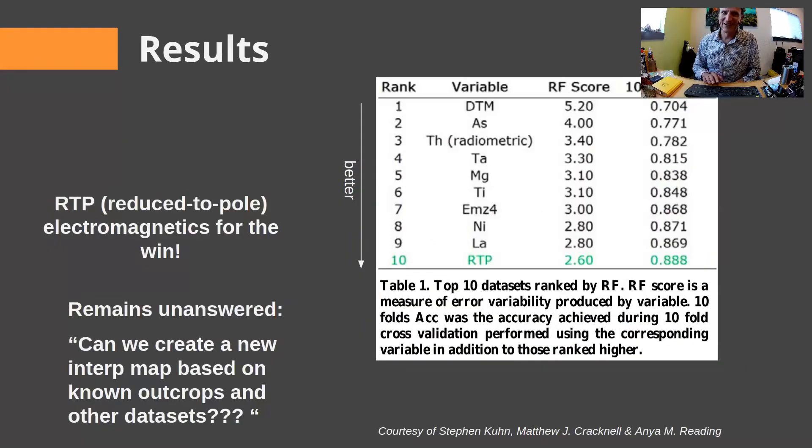The results were great. Ultimately, in this particular case, the reduced to pole electromagnetics was determined after 10 iterations of going through the random forest model to have the highest corresponding correlation with geology. Meaning, if we had a different rock type with all of the other data sets, that would be reflected in the RTP magnetics versus any of the others. However, we weren't able to answer our final question, which was, can we create a new map simply based on the random forest model? We could predict what a rock type might be, but we couldn't actually create a brand new map yet.